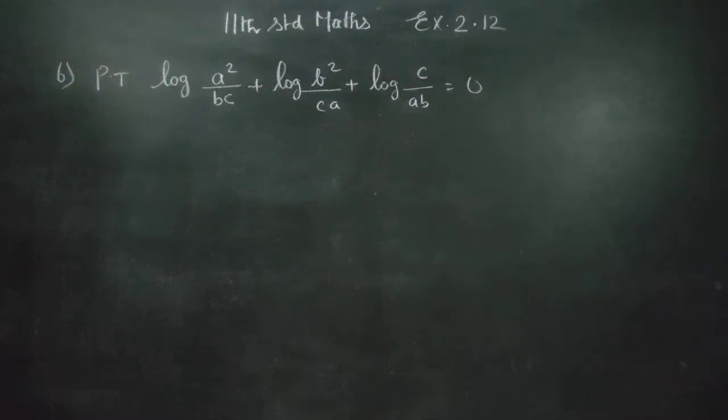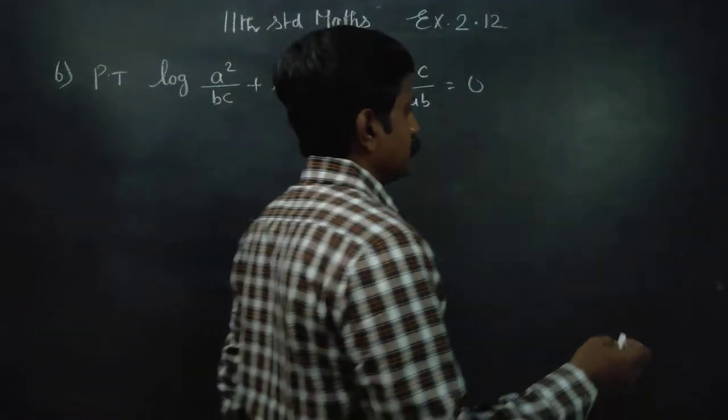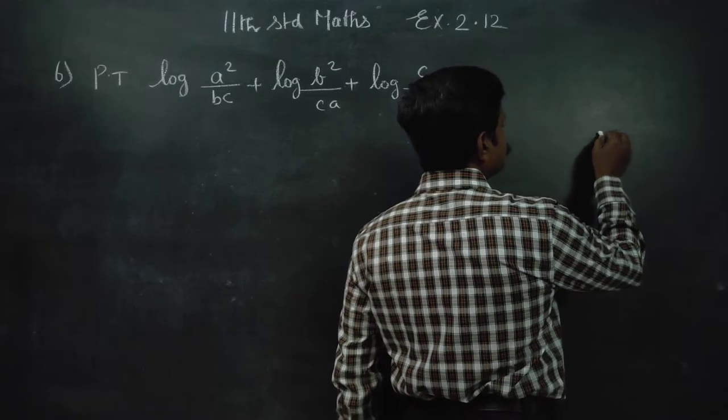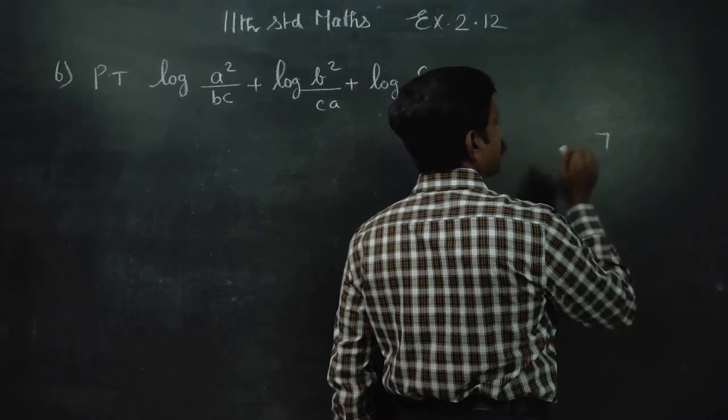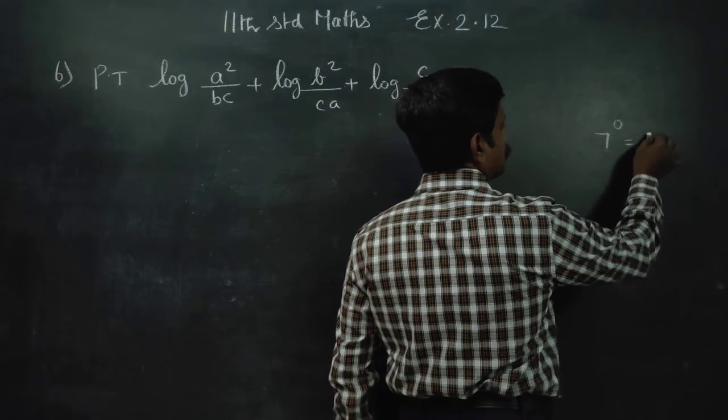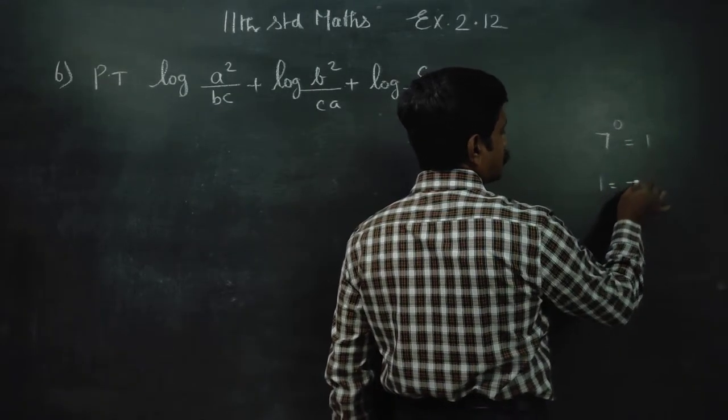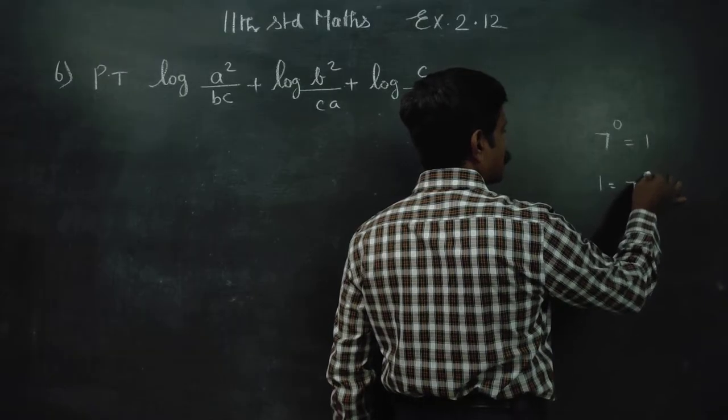Dear Learn Standard Students, before entering into the sum, a small example: 7 power 0 is 1, or 1 is equal to 7 power 0. Anything power 0 is 1, right?